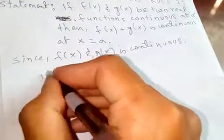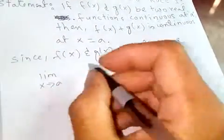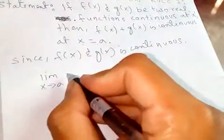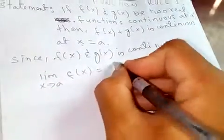So now if you take limit x tends to a, since it is x equal to a, x approaches to a f of x, this is f of a.